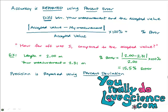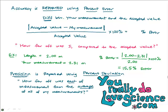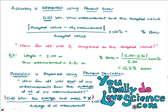Now, how do we report precision results? Precision is reported using something called percent deviation. Percent deviation is saying: how far off was each of my measurements from the average of all my measurements? For percent deviation, you need more than one measurement. For example, if you're measuring how long it takes for something to fall, you do three trials with a stopwatch and get three different times. You get the average of all those measurements and then compare each measurement to that average.